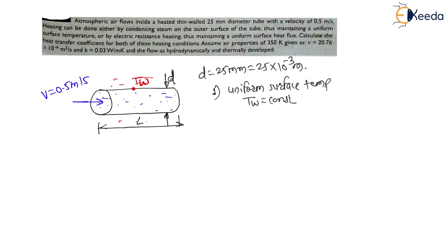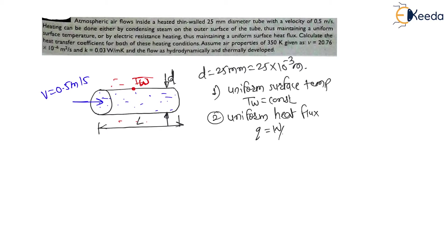The second type of heating is by electric resistance heating, thus maintaining a uniform surface heat flux. Around this tube, coils are wound, heating the tube such that the heat flux q (in W/m²) remains constant. These are the two different types of heating.